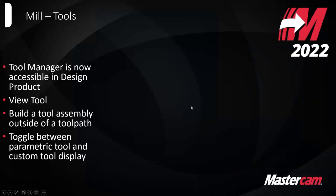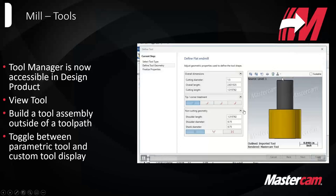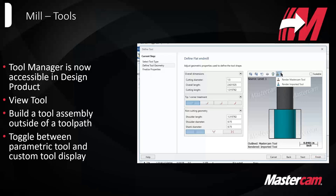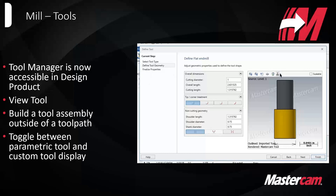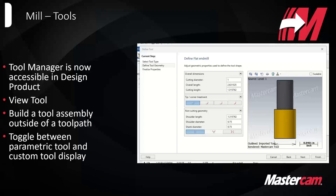You can now toggle between parametric and custom tool display when creating a tool. It makes it easier to visualize what you're importing versus what Mastercam is actually using to calculate the tool path, because people often get confused when a tool path isn't matching the imported blue geometry. They also improved the algorithm for importing tool geometry to get it closer to the parametric values right from the start.